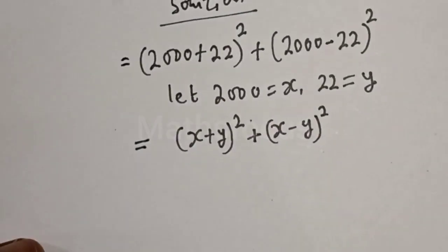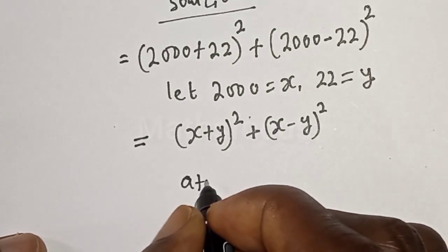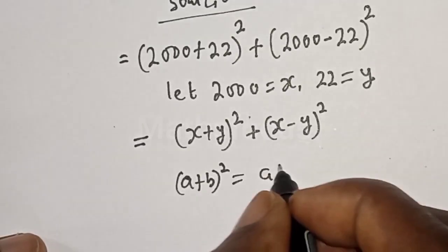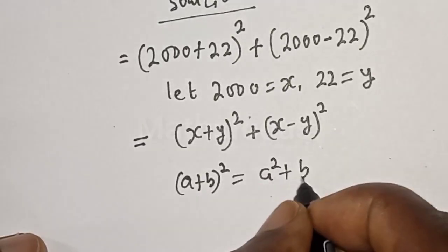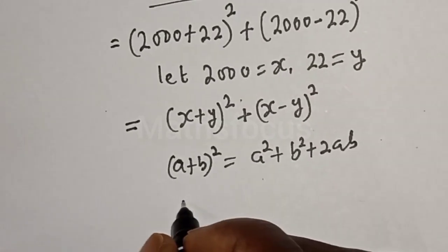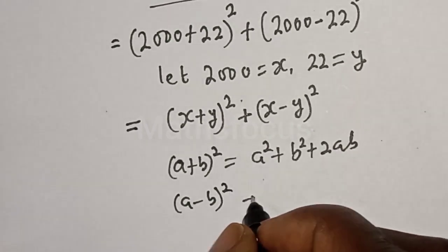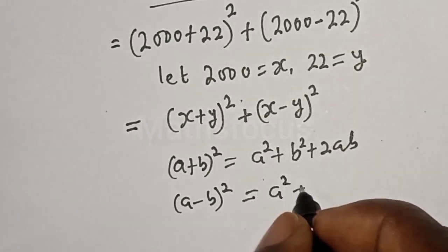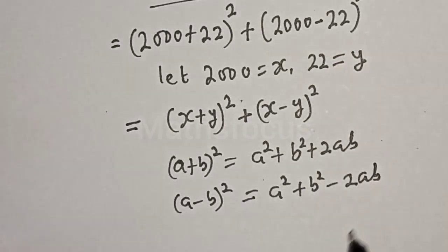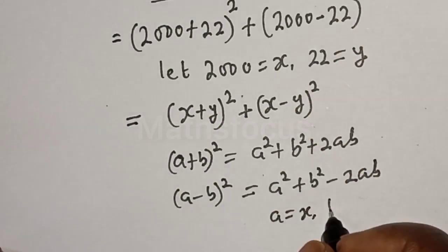Then take note of this: (a + b)² equals a² plus b² plus 2ab. Also, (a - b)² equals a² plus b² minus 2ab, where a equals x and b equals y.